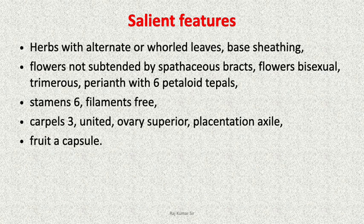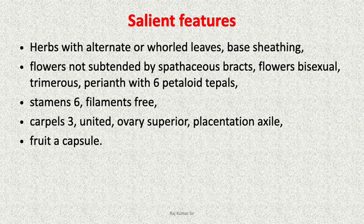Herbs with alternate or whorled leaves and sheathing leaf bases are included in this family. Flowers are not subtended by spathaceous bracts. Flowers are bisexual, trimerous, perianth with six petaloid tepals, stamens six, filaments three, carpels three, united, ovary superior, placentation axile, and fruit is a capsule. These are the diagnostic characters of this family.